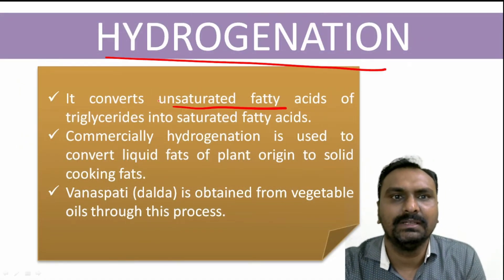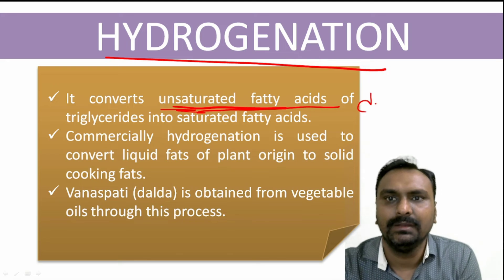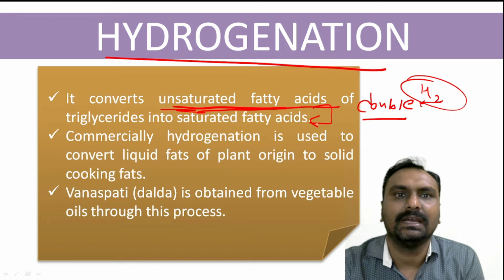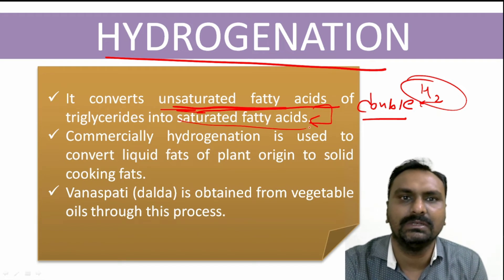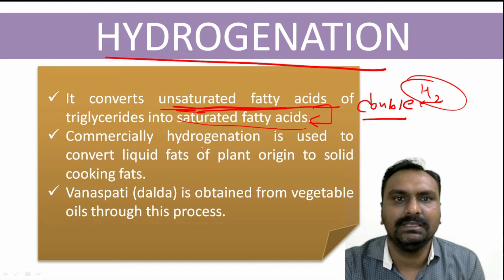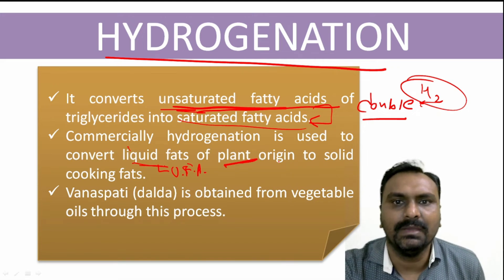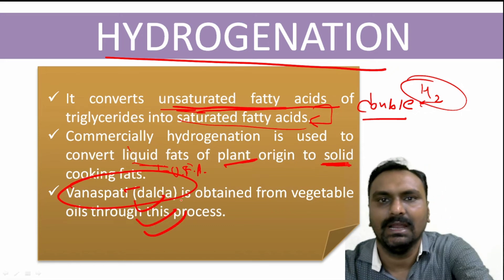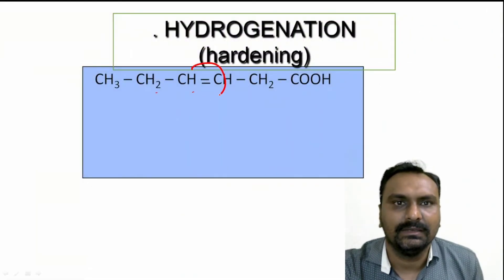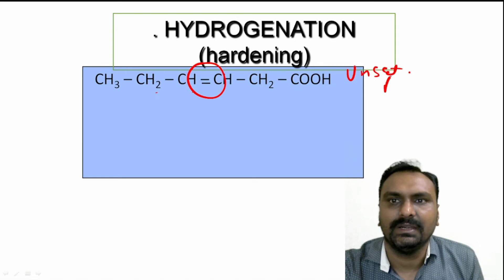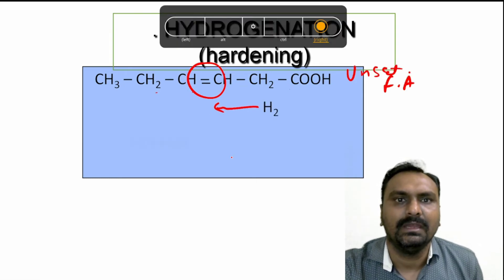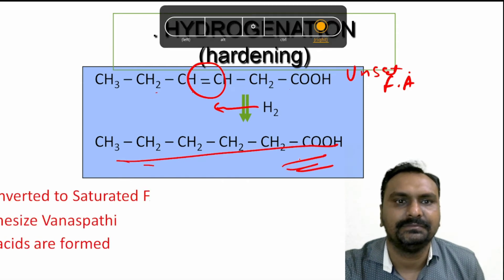In hydrogenation, unsaturated fatty acids which have a double bond will accept hydrogen. In the presence of hydrogen, these unsaturated fatty acids are converted to saturated fatty acids — no double bond will remain. Commercially, this hydrogenation is used to convert liquid fats — mainly unsaturated fatty acids — into solid cooking fats. The example is Vanaspati Ghee, also called Dalda. You can see here the double bond in the unsaturated fatty acid; it accepts hydrogen and is converted to saturated fatty acid.